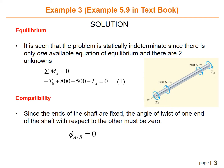For the equilibrium, the problem is statically indeterminate since there is only one available equation of equilibrium and there are two unknowns, which are Tb and Ta. Find the summation of Mx equals zero, giving the equation: negative Tb plus 800 minus 500 minus Ta equals zero. This is equation number one.